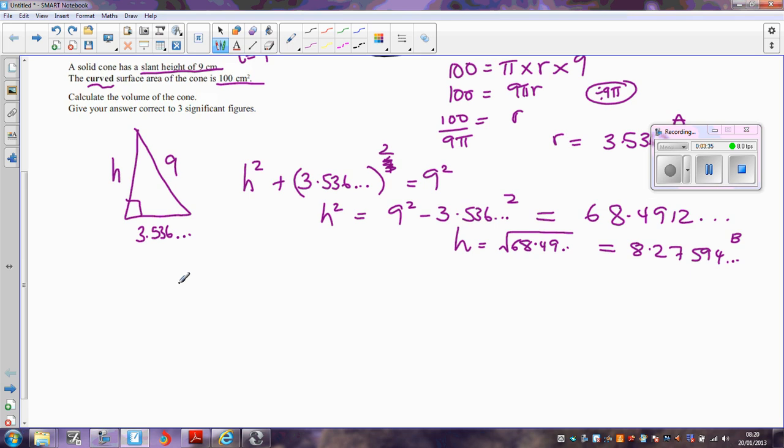Okay, now I'm ready to find the volume of the cone. Remember, the volume of the cone is one-third pi r squared h, and we've found both r and h.